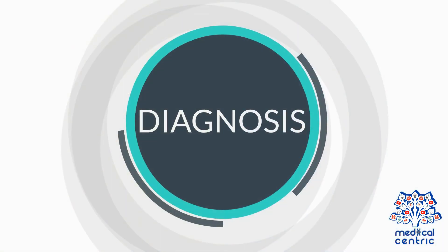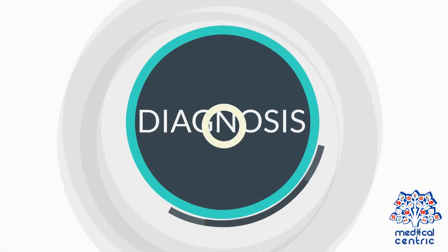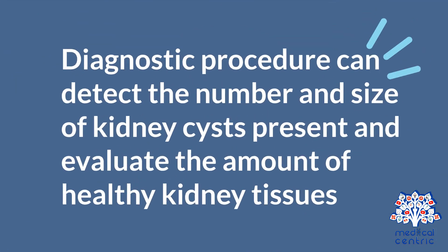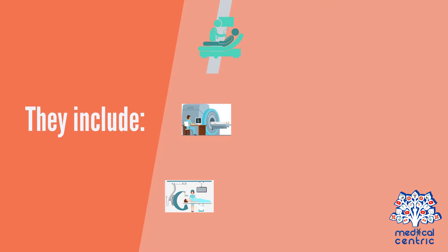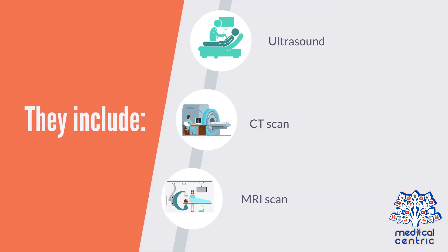Diagnosis and treatment. Diagnostic procedures can detect the number and size of kidney cysts present and evaluate the amount of healthy kidney tissue. They include ultrasound, CT scan, and MRI scan.